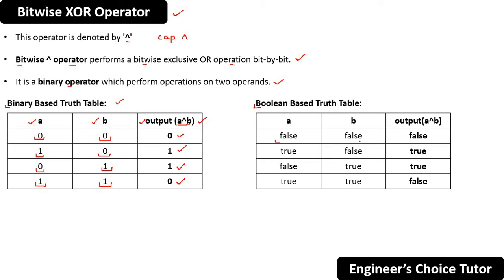Now let's see the boolean-based truth table. If a is false and b is false, you get false. If a is true and b is false, you get true. If a is false and b is true, you get true. And if both are true, you get false.